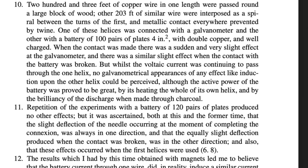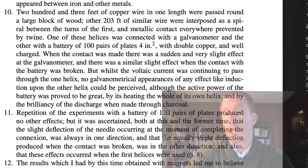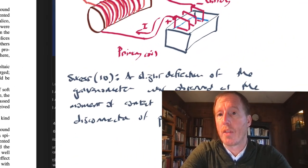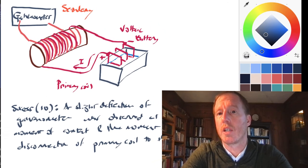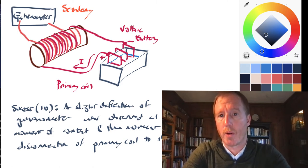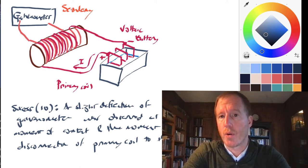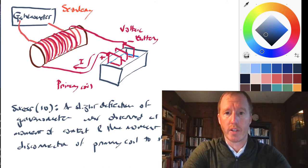He says, but whilst the voltaic battery was continuing to pass through the one helix, no galvanometrical appearances could be perceived, although the active power of the battery was proved great by its heating of the whole helix. When he makes contact with the primary coil and turns it on, there's a sudden deflection of the galvanometer. But even when you keep the contact made, so current continues through the primary coil, the effect dies away. How does he know current continues? The wire in the primary becomes red hot.